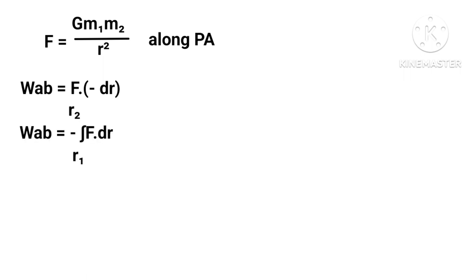Force applied on m2 at P: F equals Gm1m2 upon r squared along PA. Therefore, Wab equals F times negative dr integrated from r2 to r1. Wab equals integral of Gm1m2 times one upon r squared dr from r1 to r2.